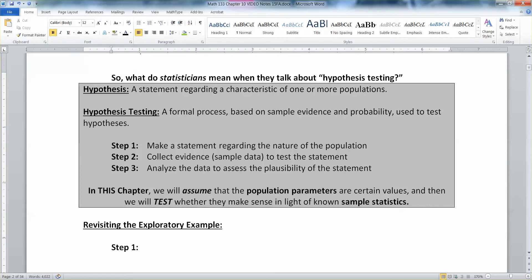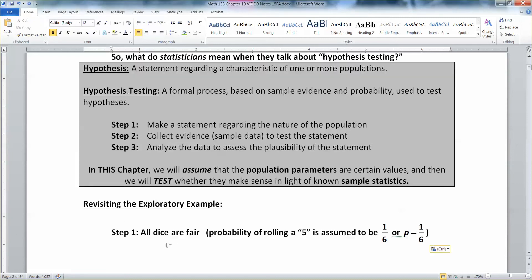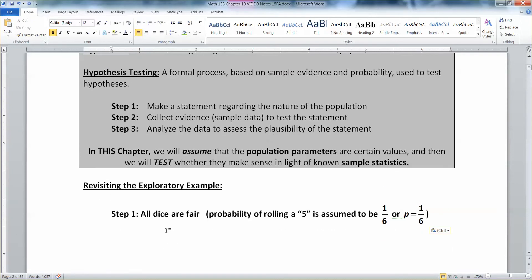We made a statement regarding the exploratory example. You might not have realized it, but if I hand you a die in class, you assume that all the dice I'm passing out are fair. More fool you, because of course they wouldn't be, but that's step one. You make a statement even in your mind about the nature of the population. So you assume that the probability of rolling a five is going to be one sixth. In other words, p is one sixth.